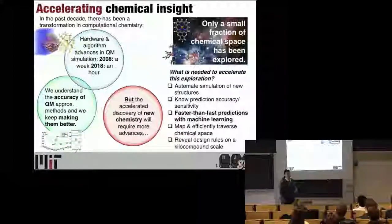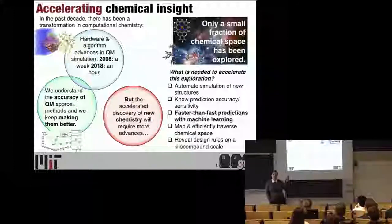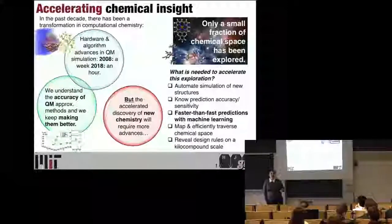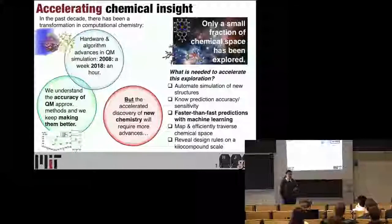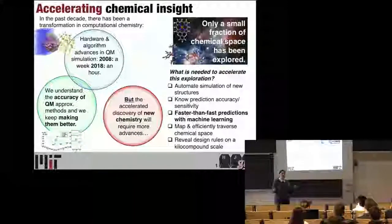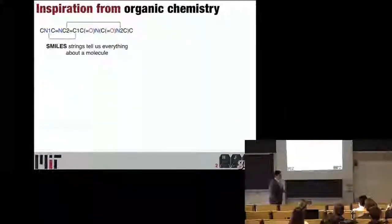Think about knowing prediction accuracy and sensitivity — if I find a molecule that seems like the best molecule in the world, do I think that just because I used a certain DFT functional? I want to be able to overcome the fact that even if calculations are a hundred times faster, that's still not fast enough. Machine learning for us is part of a broader effort to think about how we get through this chemical space. Maybe it doesn't matter how big the space is if we know where we need to go, and how do we start to reveal design rules now that we can look at thousands of molecules at a time, as opposed to a handful?